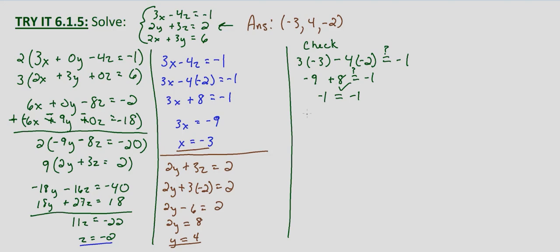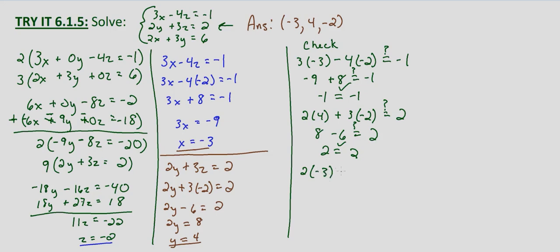Now for our second equation, 2y plus 3z equals 2: 2 times 4 plus 3 times negative 2. Does that equal 2? 8 minus 6 equals 2. Yes it does — 2 equals 2, so it checks in our second equation. And then our third equation, 2x plus 3y equals 6: 2 times negative 3 plus 3 times 4. Negative 6 plus 12 equals 6. Yes it does check — 6 equals 6.